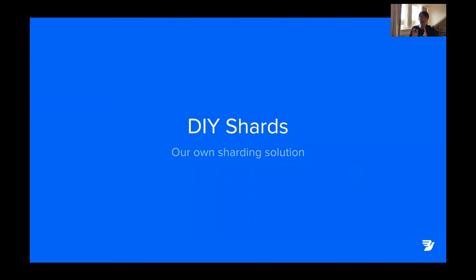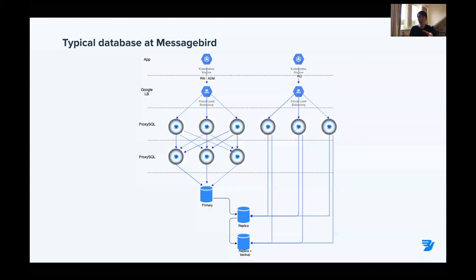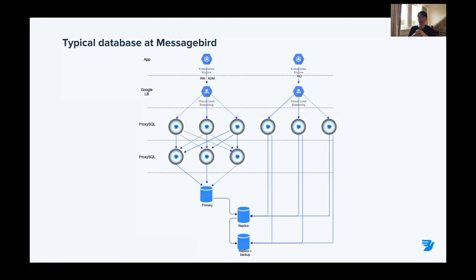Let's jump into our own sharding solution and why we created it. To understand that, we need to look at the typical database setup at MessageBird. At the bottom, we have a primary and two replicas replicating asynchronously. Above that, we have three layers of service discovery. At the top, the application connects with a read-write connection to a load balancer in our Google Cloud. That load balancer distributes connections evenly over ProxySQL hosts, which then point to a second layer that ensures they're all pointing to the same primary — and this is basically where our failover logic happens.